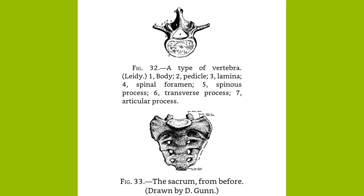In the cervical region, the upper surface is concave laterally and the under-surface convex laterally and concave from before back. Between the bodies are discs of fibrocartilage, which increase motion and springiness. The spinous process, or spine, is short in the cervical region, long and directed downward in the dorsal region, thick and projecting almost straight out in the lumbar region. The pedicles are notched above and below so that when articulated, the notches of two vertebrae join to form the intervertebral foramen for the outward passage of nerves and the inward passage of blood vessels.